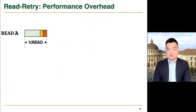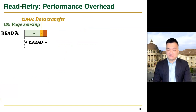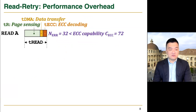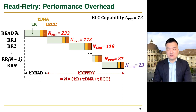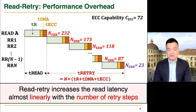Unfortunately, read retry also significantly increases the read latency. Reading a page consists of three steps: page sensing at the chip, data transfer from the chip to the flash controller, and ECC decoding at the flash controller. If the number of bit errors is lower than the ECC correction capability, the read request can be returned immediately after ECC decoding. However, when the number of raw bit errors is higher than the ECC correction capability, the flash controller performs multiple retry steps until it reduces the number of bit errors below the ECC capability. This in turn increases the read latency almost linearly with the number of retry steps.